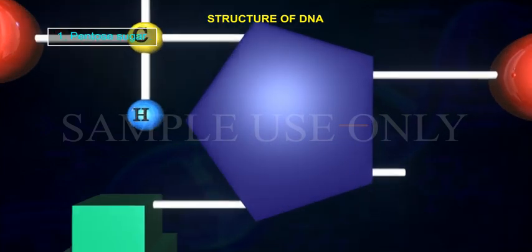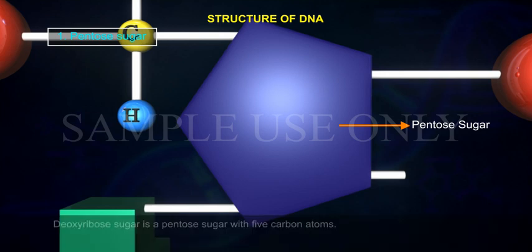1. Pentose sugar. Deoxyribose sugar is a pentose sugar with five carbon atoms.